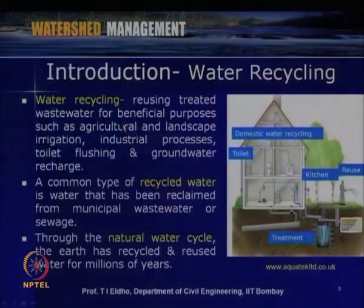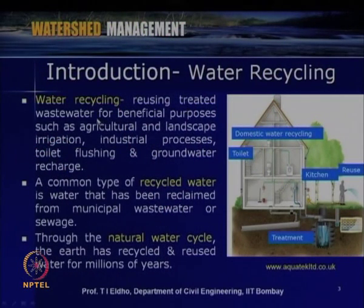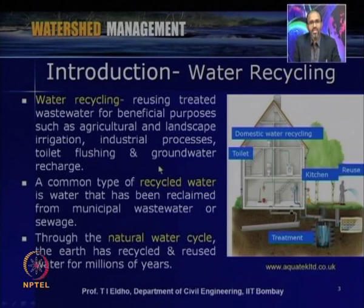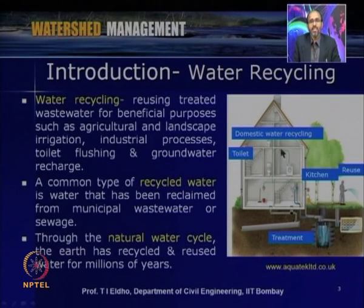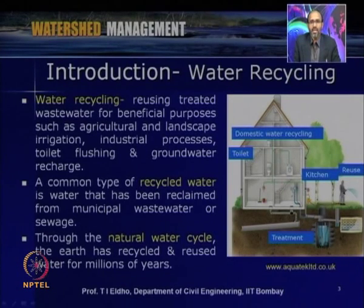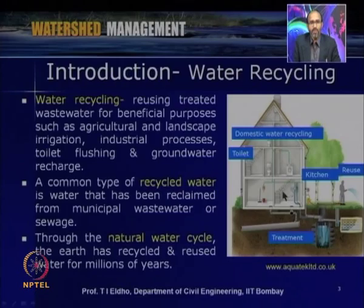Water recycling is reusing treated wastewater for beneficial purposes such as agricultural and landscape irrigation, industrial processes, toilet flushing, and groundwater recharge. For example, in a residential building, water coming from sinks can be separated, given primary treatment, and used directly for irrigation. Water coming from toilets can pass through a septic tank or be given some treatment and then used for other purposes. A common type of recycled water is water reclaimed from wastewater or sewage, either from industrial sources, domestic sources, or municipal wastewater.